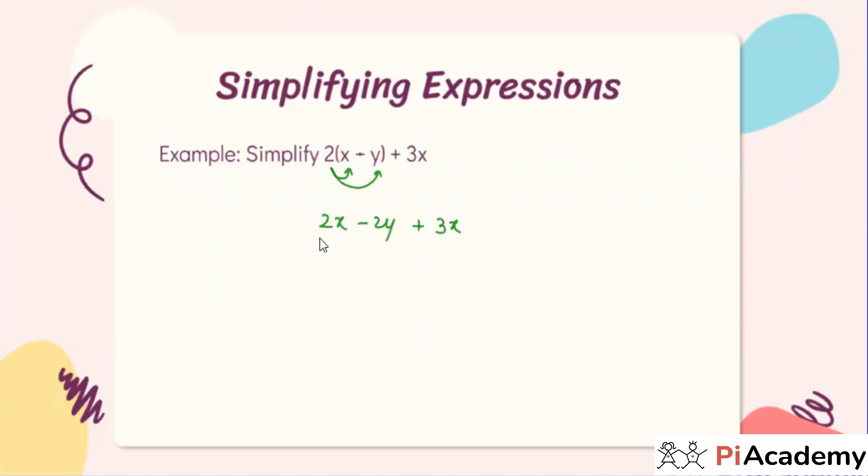After this, 2x plus 3x, you have to add them because they are like terms, so you are able to combine them. 5x minus 2y. Okay, this is the answer. Are you getting this answer, everyone? Tell me if you have any doubt. You can raise your hand if you have any doubt in this explanation.